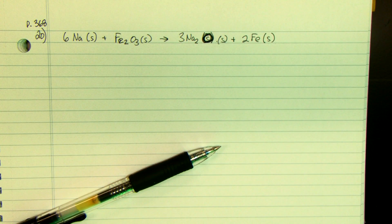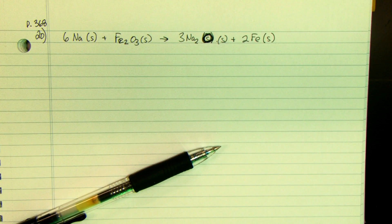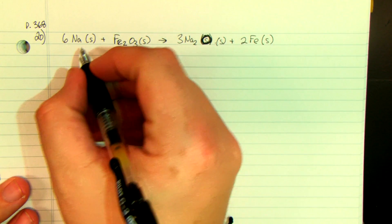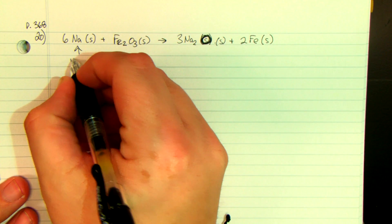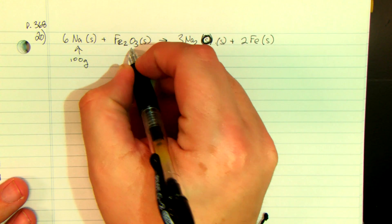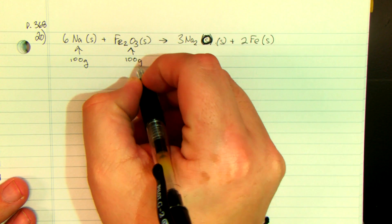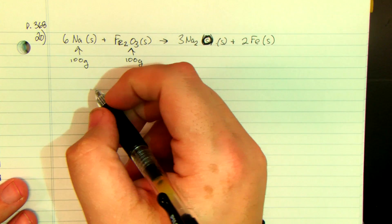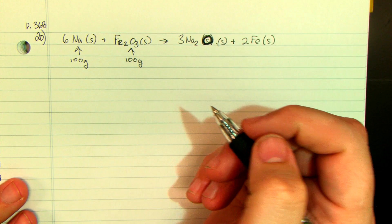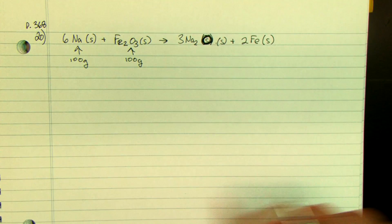We are going to talk about page 368, number 20. It's a limiting reactant equation and we're trying to figure out exactly what the limiting reactant is. We have our equation — we're given 100 grams of sodium and 100 grams of iron 2 oxide — and we have to figure out the limiting reactant.